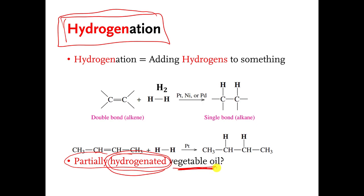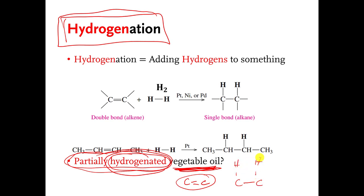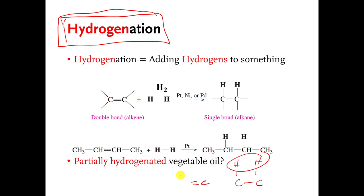In other words, vegetable oil must have some carbon-carbon double bonds, and if they partially hydrogenate the vegetable oil, that means they convert some of the carbon-carbon double bonds into single bonds, and end up adding hydrogens to the vegetable oil, but they only do it partially — only to some of the double bonds. I think it makes it last longer, maybe taste a little better, but that's where that word comes from.